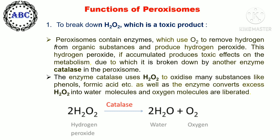The enzyme catalase uses hydrogen peroxide to oxidize many substances such as phenols and formic acid. It also converts excess hydrogen peroxide into water molecules, liberating oxygen. In this reaction, two molecules of hydrogen peroxide are broken down by catalase into two molecules of water, and oxygen is released in the form of bubbles.